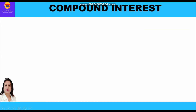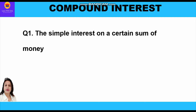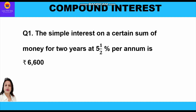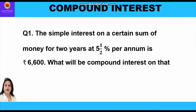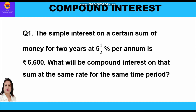Now let's take the first question. The simple interest on a certain sum of money for two years at five and a half percent per annum is rupees 6600. What will be the compound interest on that sum at the same rate for the same time period?